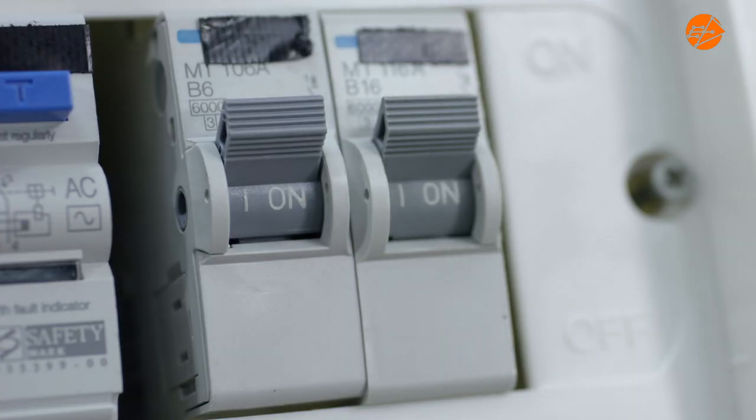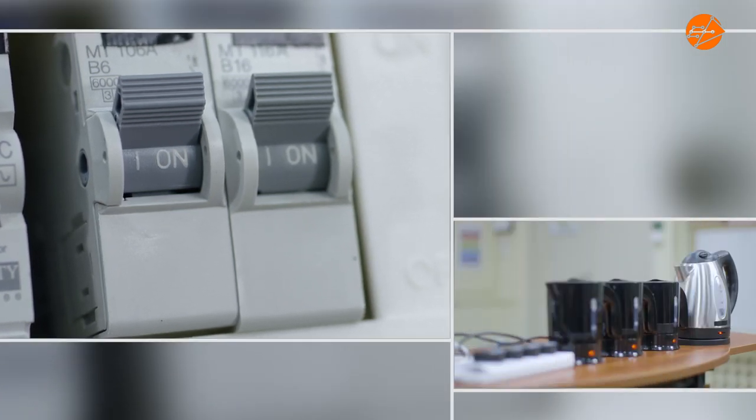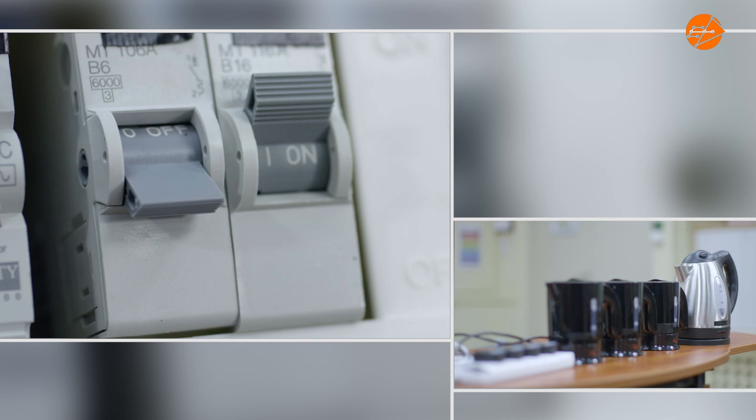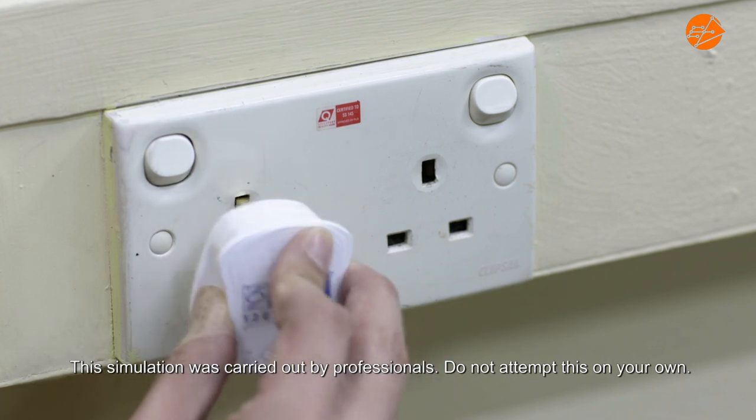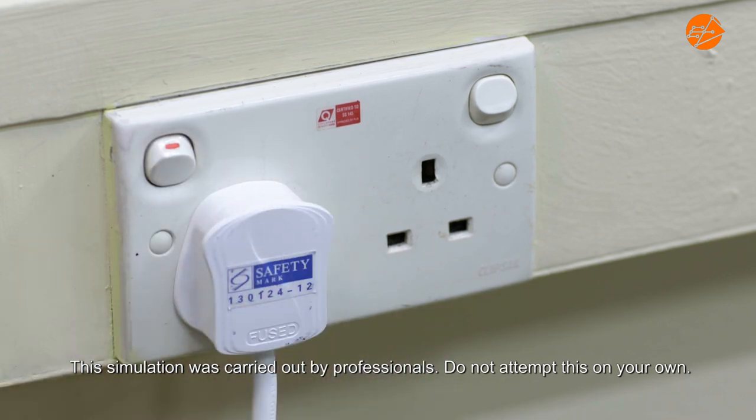Circuit breaker is a safety device. It switches off the electric supply when the current flowing through the circuit is greater than the rating. This is important to prevent overheating of cables and hence prevents electrical fire due to an electrical fault or overloading.